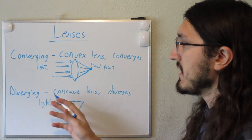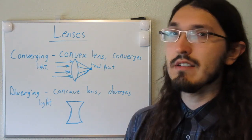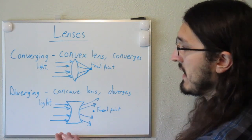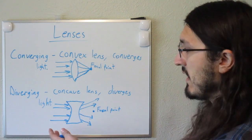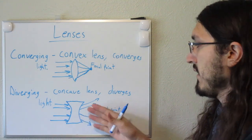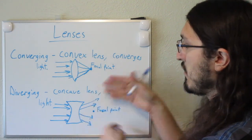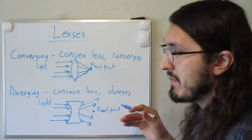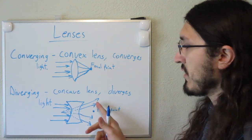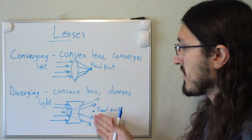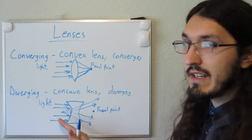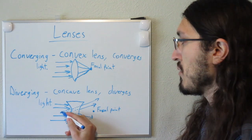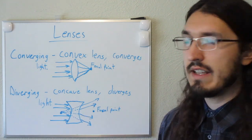On the other hand, diverging lenses diverge the light away from the focal point. For the diverging lens, we have the light coming in on the left side and on the right side these rays get directed away from the focal point. Because these lenses are symmetrical on the left and right side, if you trace back all of these rays to the other side where they came from, they will converge at the focal point on the other side of the lens.